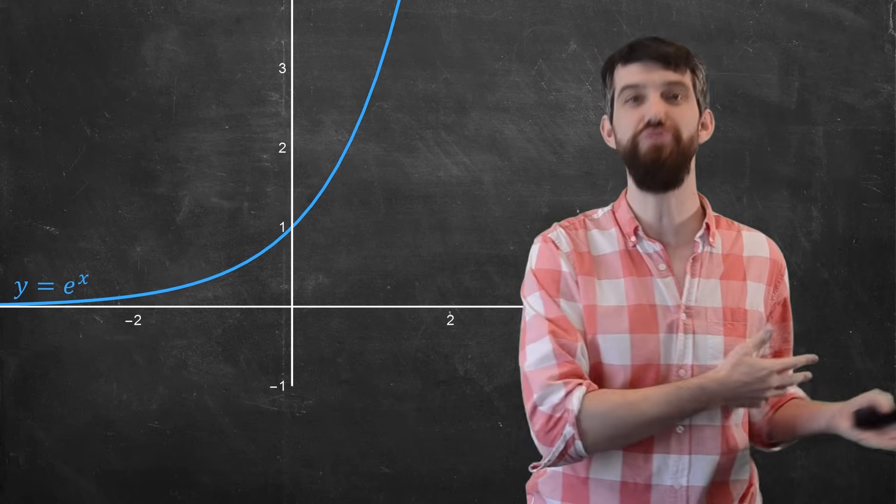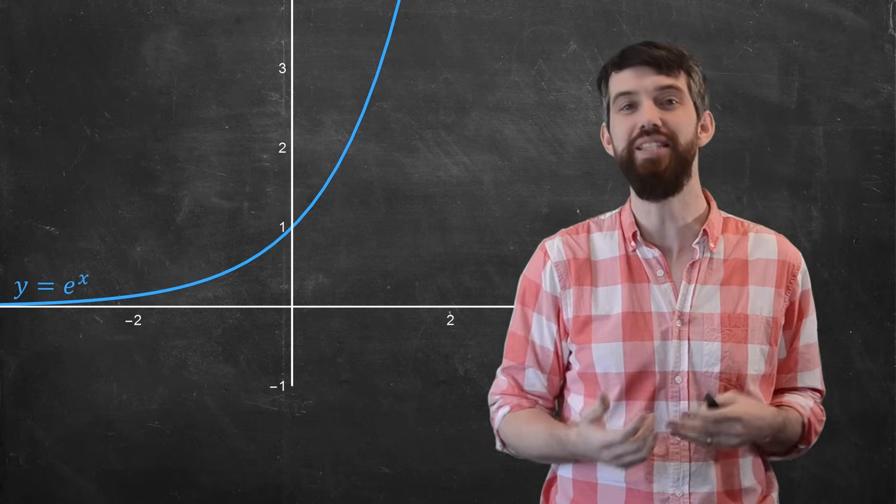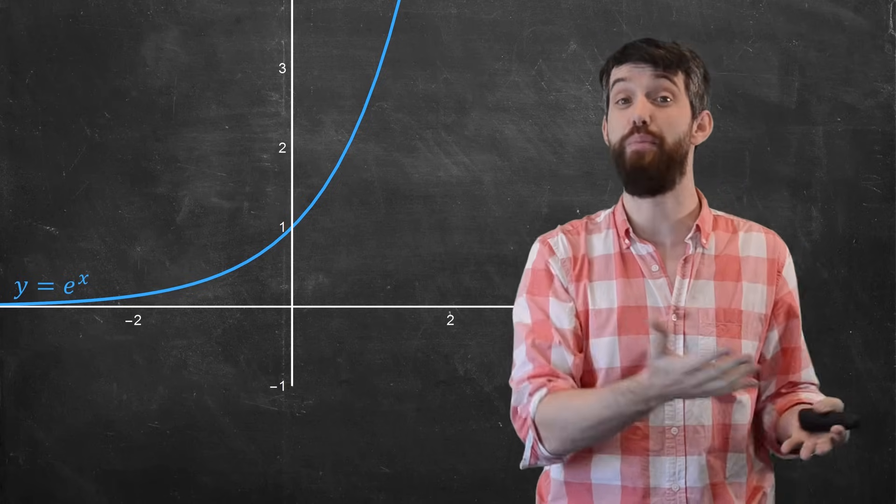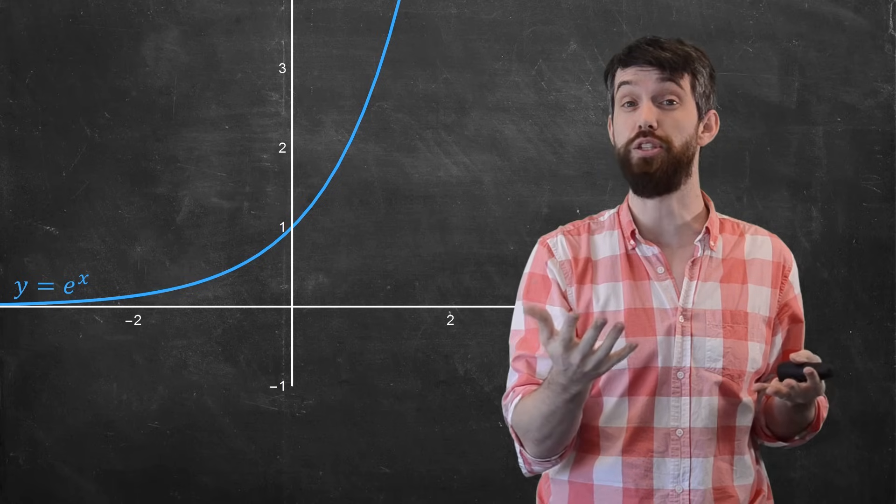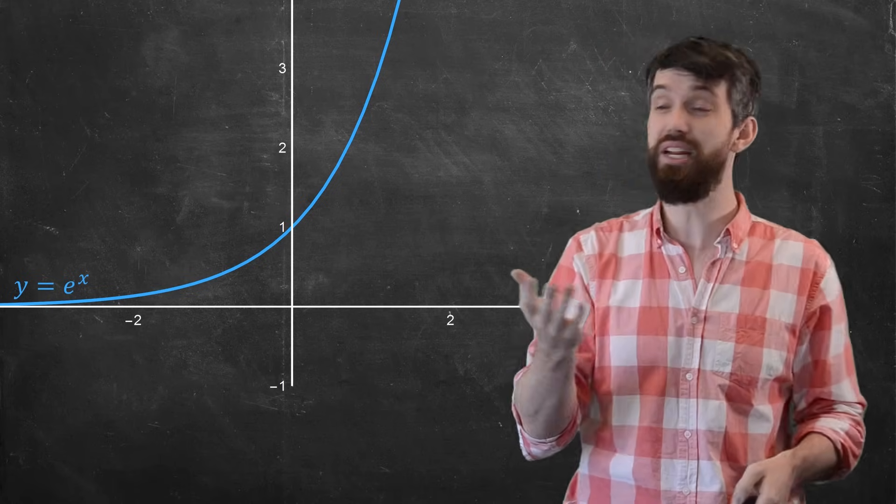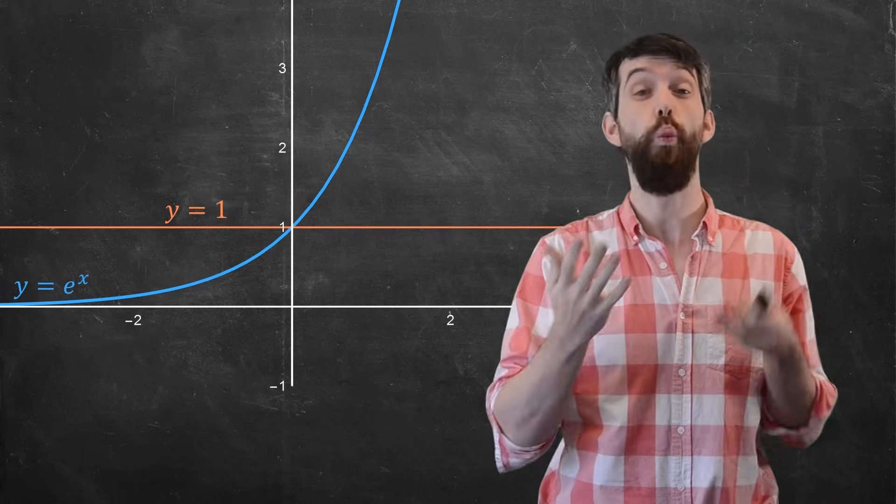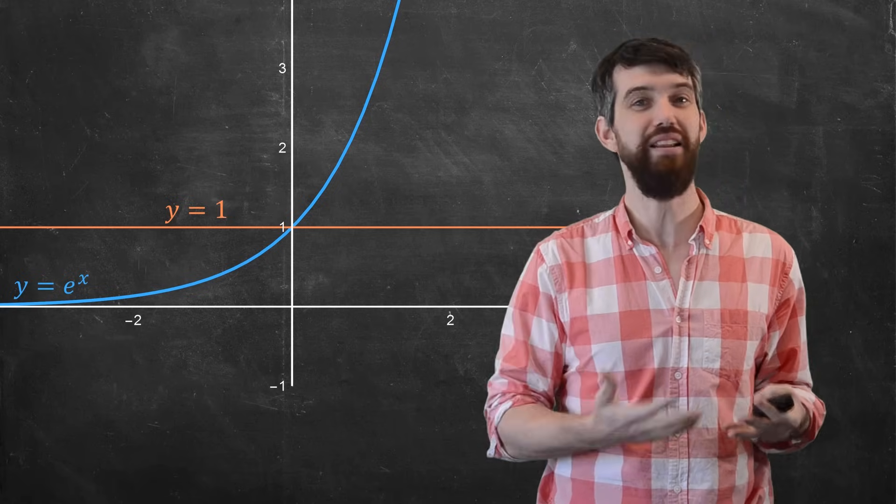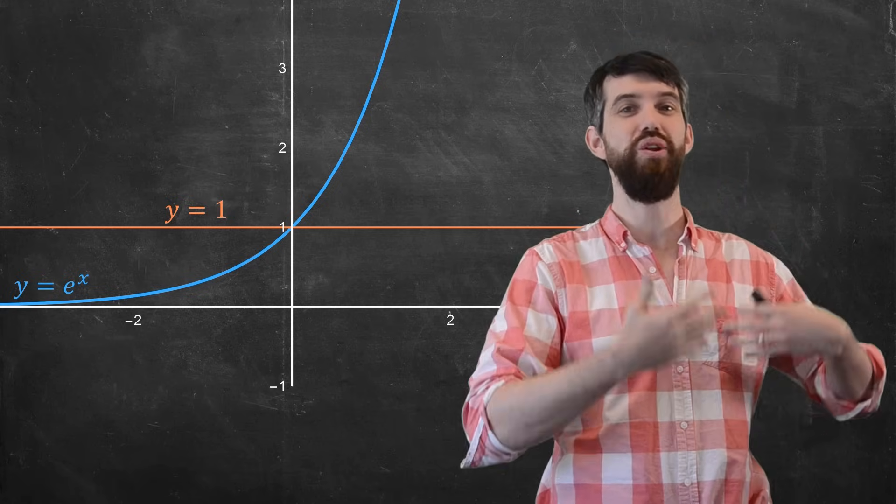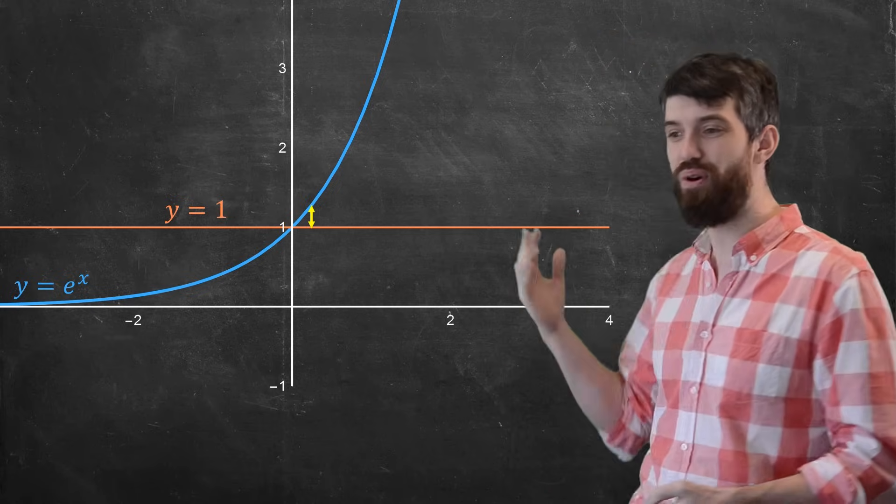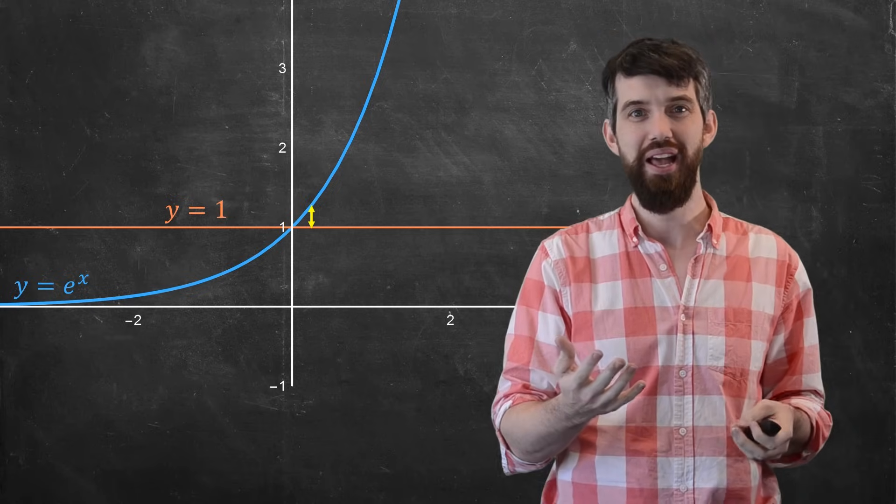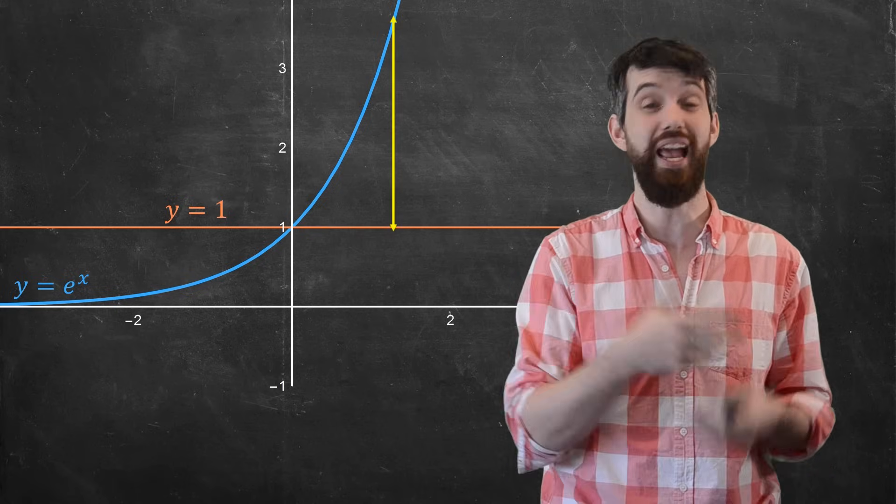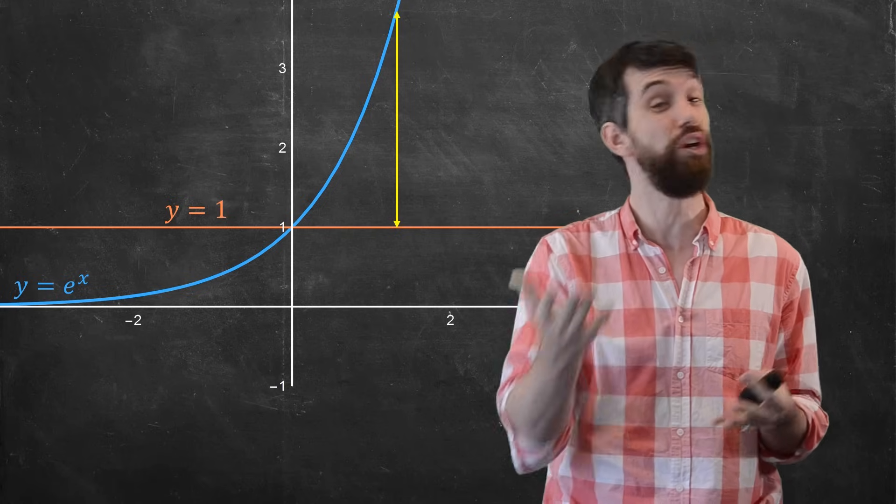For example, imagine that you're in high school and you don't know calculus and you have to figure out what is e to the 0.2. One of the things that you could do is say, look, e to the 0 is a number that you know. e to the 0 is just 1. So what if I considered instead of e to the x, just y equal to 1, the constant function 1? Now, approximating e to the 0.2 by 1, it's not bad. There's a little error that remains here. But if I considered e somewhere larger and further away from 0, this error grows to be really large pretty quickly.